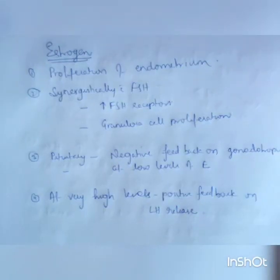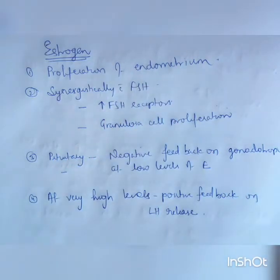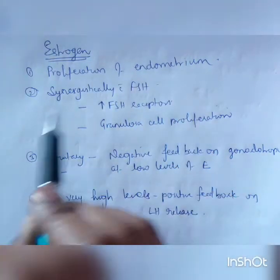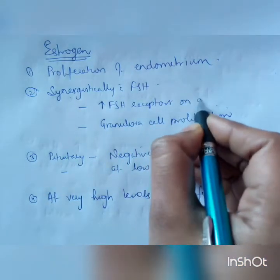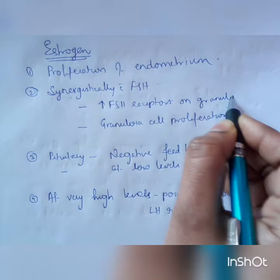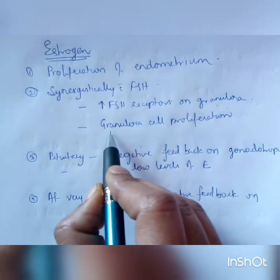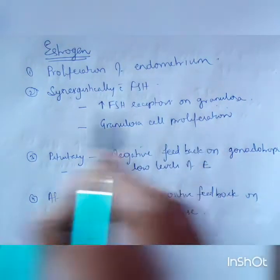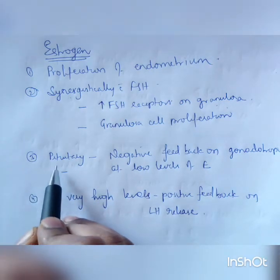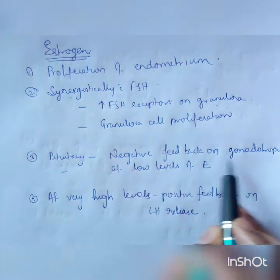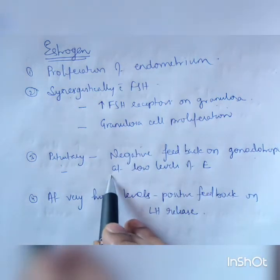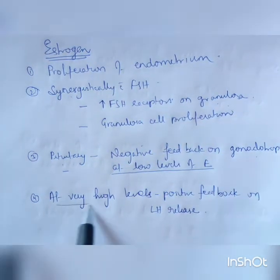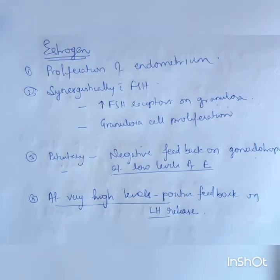One of the functions of estrogen at the level of the endometrium is to cause proliferation — the endometrium goes into the proliferative phase. Then, synergistically with FSH, estrogen increases FSH receptors on granulosa cells and causes granulosa cell proliferation. At the level of the pituitary, it has a negative feedback effect on gonadotropins, decreasing FSH secretion at lower estrogen levels. At very high levels, it has a positive feedback effect on LH.